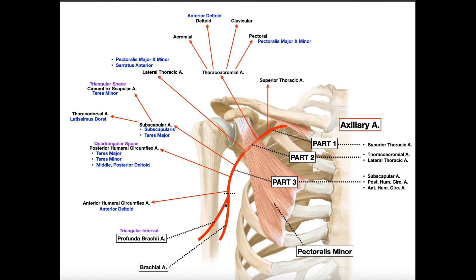The profunda brachii artery is associated with the triangular interval. When you look at the triangular interval, you will be able to see this artery and its several branches. In some individuals it gives a small contribution to the deltoid muscle, but the profunda brachii artery is primarily important for supplying the triceps brachii and the anconeus muscle. The anconeus is essentially a downgrowth of the triceps — a synergist on the posterior arm near the elbow.